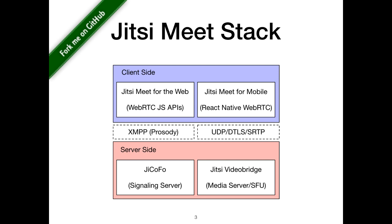So let's start — here's the 10,000 foot view. The main components of the Jitsi stack are the signaling node, the selective forwarding unit, or SFU in short, also called GT video bridge or simply bridge — I'm going to use all these terms interchangeably. We also have two client applications: one that runs on the web and one that runs on mobile devices. The web client is based on the WebRTC JavaScript APIs, which were covered on Monday in Bernard Aboba's WebRTC tutorial.